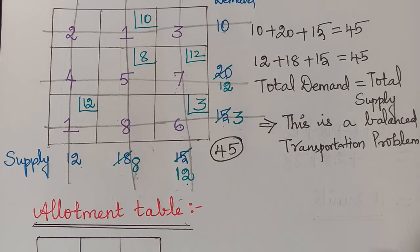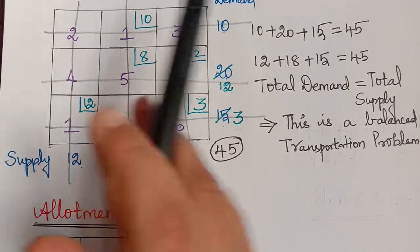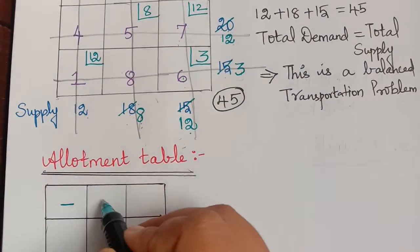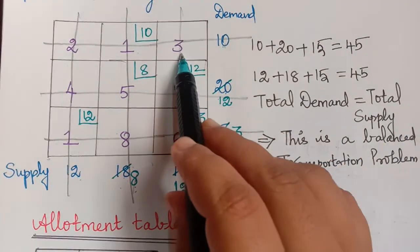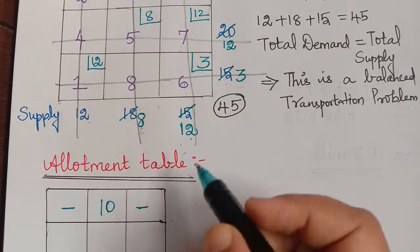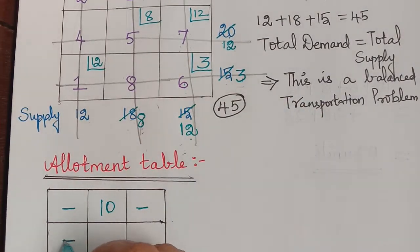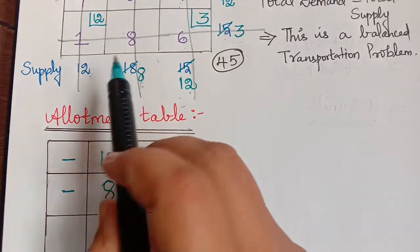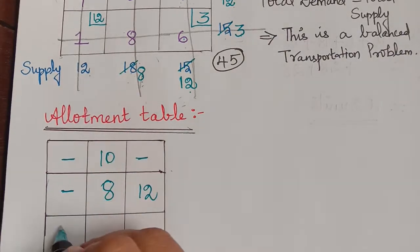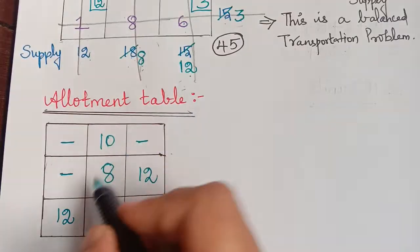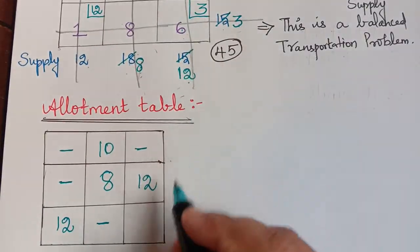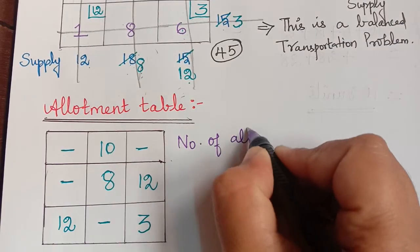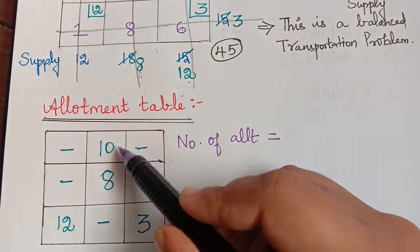Writing the allotment table: the first cell has no allotment (dash), the second cell has 10, the third cell has no allotment (dash). In the second row: no allotment (dash), allotment of 8, allotment of 12. In the third row: allotment of 12, no allotment (dash), allotment of 3. Counting the allotments: 1, 2, 3, 4, 5 — we have made 5 allotments.